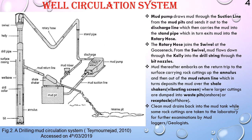The mud pump sucks or draws mud from the mud pit through the mud suction line and discharges it into the stand pipe. From there, the mud travels through the rotary hose and down through the drill bit. The main purpose of using drilling fluid during any drilling operation is to remove fluid cuttings during the drilling process.